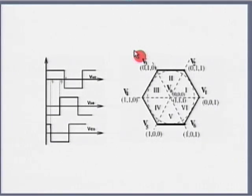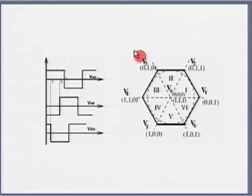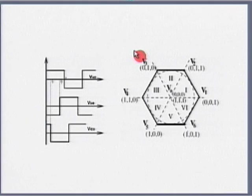If I do that, I have a sinusoid. And if the load is inductive, my current waveform is going to be approximately a sinusoid. The voltage is made up of a large number of pulses, but if the load is inductive, I can have a current waveform which is approximately a sinusoid.